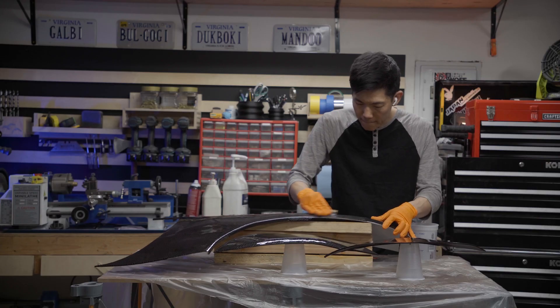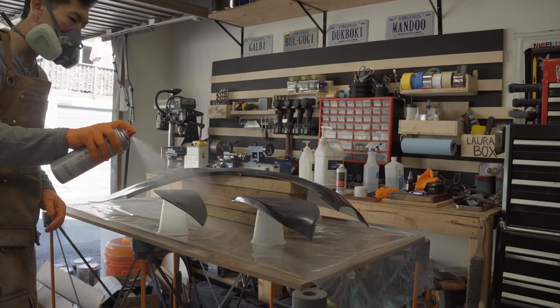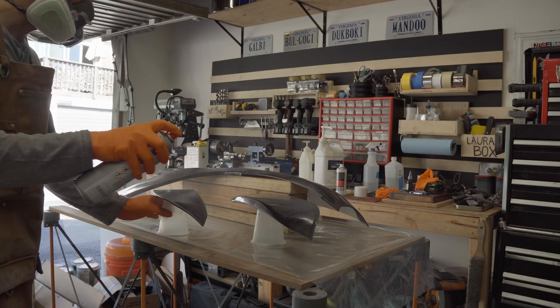Finally, I wet sanded up to 600 grit and sprayed 3 coats of 1K clear for some UV protection, and this is how it came out.